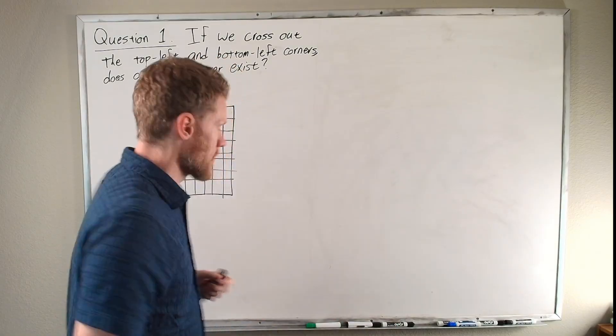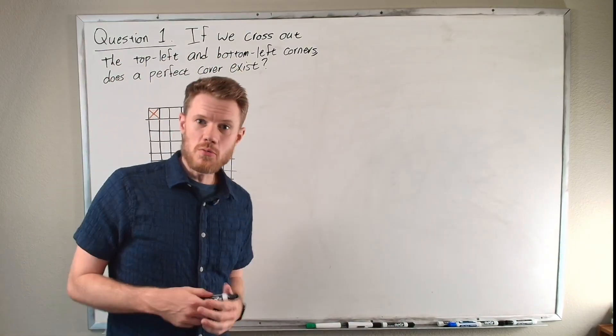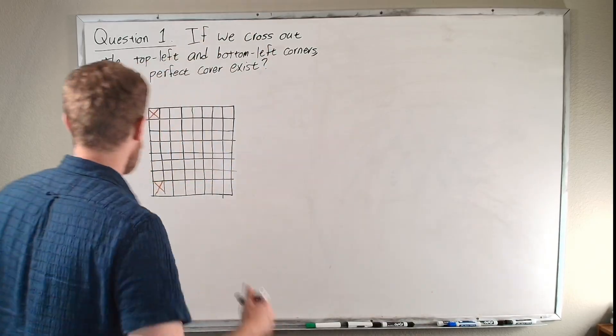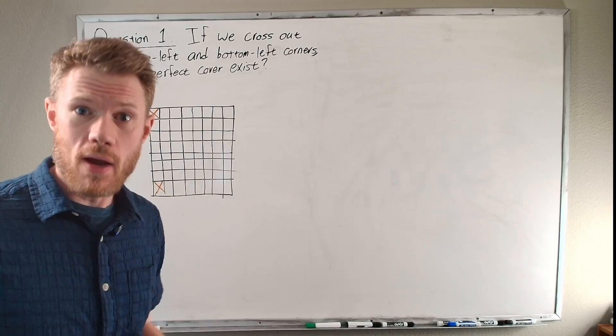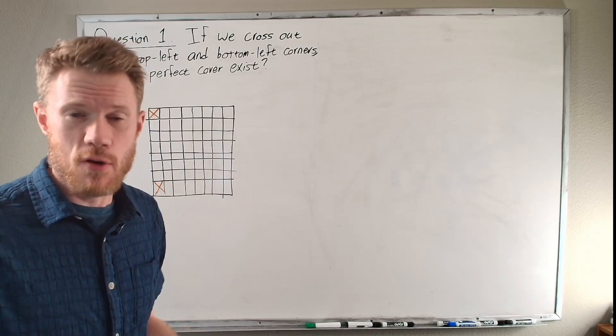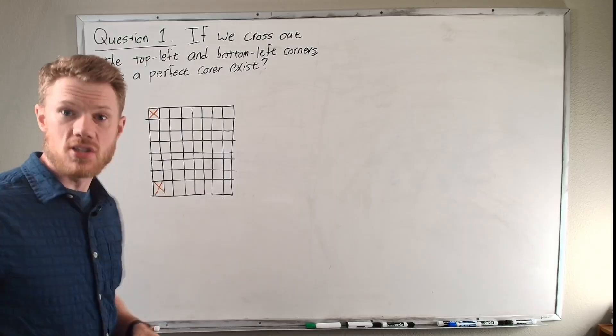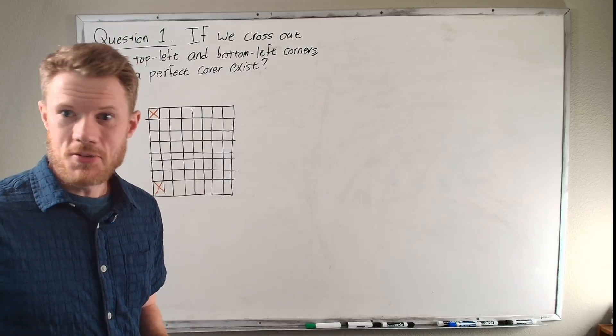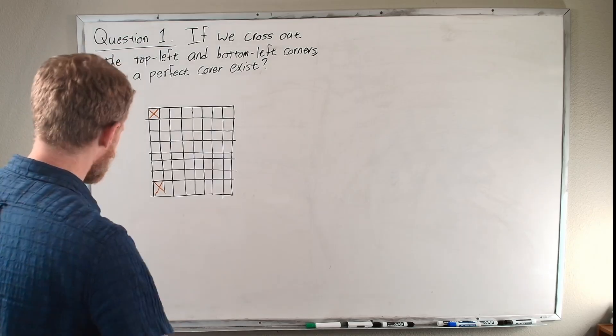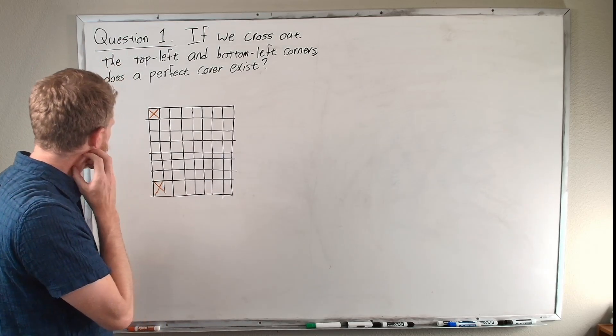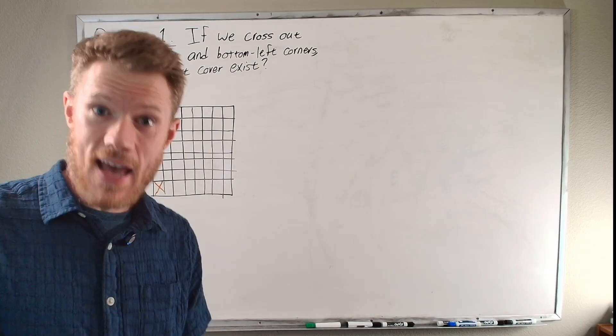So now let's ask some other questions. For example, suppose you don't want to cover the entire chess board. What if I cross off the top left and the bottom left squares? I don't want to cover those two squares. I only want to cover the other 62 squares. Is there a way, does there exist a perfect covering with dominoes of the remaining squares of the chess board? So think about it for a second. Okay, so probably many of you came up with the same solution. The answer is yes.